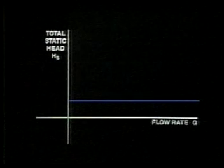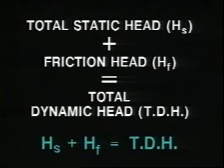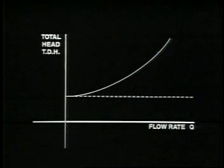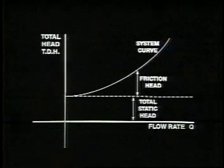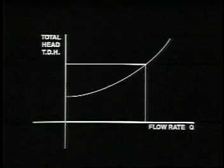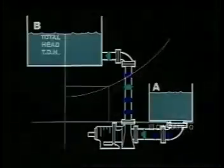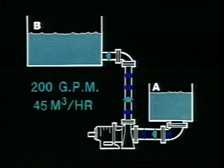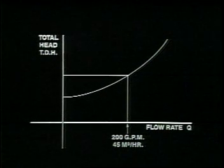The total static head is not a variable of the flow rate; therefore, a graph of the total static head compared to the flow rate would show up as a straight line. A combination of total static head and friction head is referred to as total dynamic head, or sometimes simply as total head. A graph of the total dynamic head compared to the flow rate is called a system curve. It provides a clear picture of how the system performs — if the flow rate is raised or lowered, the total head to be overcome will also increase or decrease correspondingly. In our simple pumping system with a flow rate of 200 gallons per minute, or 45 cubic meters per hour, the system curve identifies the necessary total head which must be overcome to empty tank A.